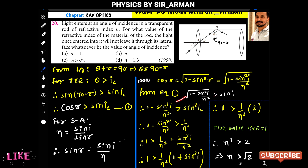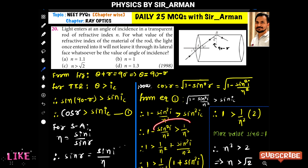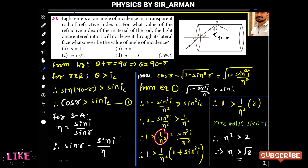Squaring both sides: 1 - sin²(i)/n² > sin²(ic). For total internal reflection, sin(ic) = 1/n, so sin²(ic) = 1/n². Substituting and rearranging: 1 > 1/n² + sin²(i)/n², which gives 1 > (1 + sin²i) / n².